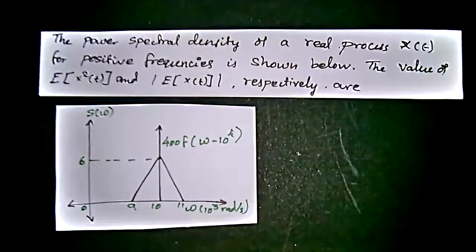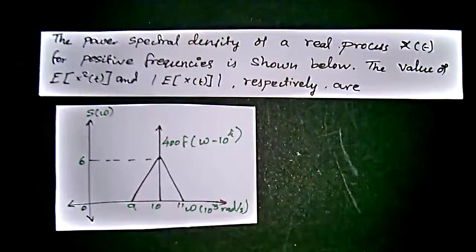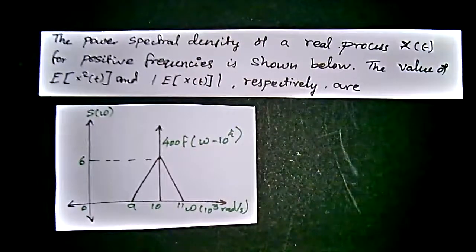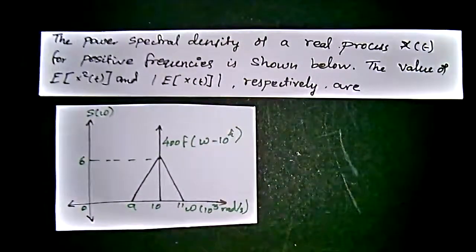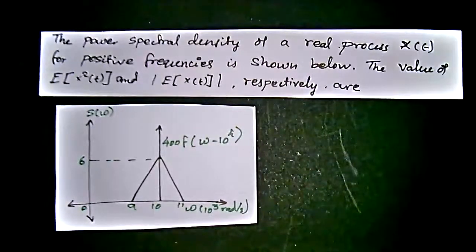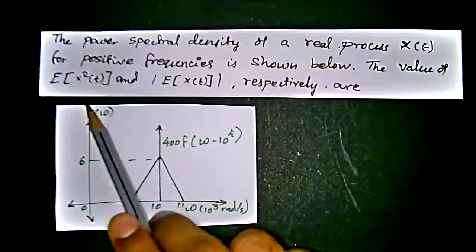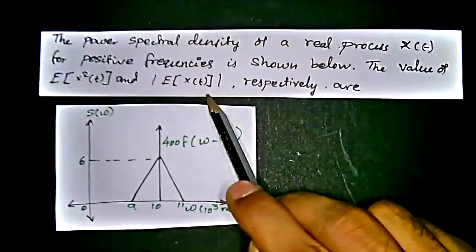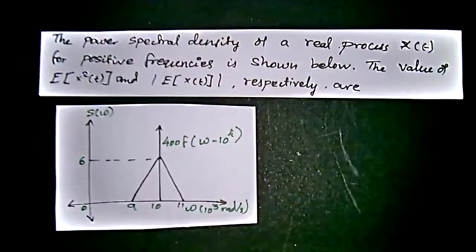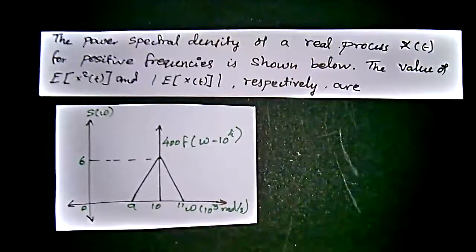The value of expectation of X²(t) and modulus of expectation of X(t) respectively are to be found. That is, we have to find the expectation of X²(t), which we can say as variance, and expectation of X(t) is the mean value in random process terminology.